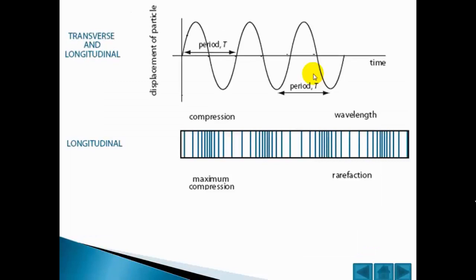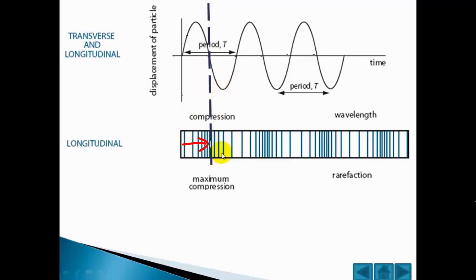Here at the top we have a displacement time graph. We can see where the areas of compression and rarefaction correspond to the curve on the displacement time graph. On the graph, zero displacement corresponds to the centre of compression and the centre of rarefaction. If we take the first compression, we can see that the particles on the left of the maximum compression must be displaced to the right. Also, the particles that are on the right of the maximum compression must be displaced to the left to cause the compression.